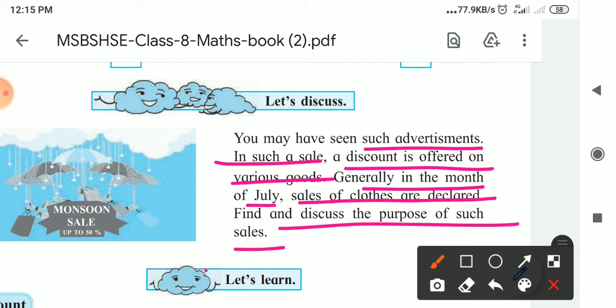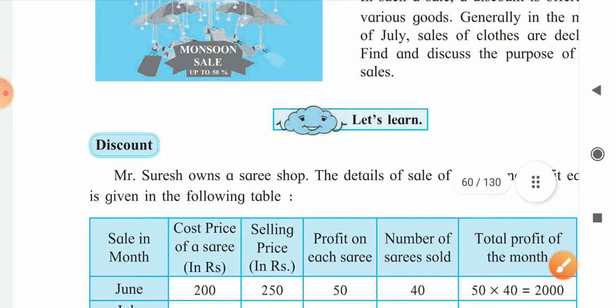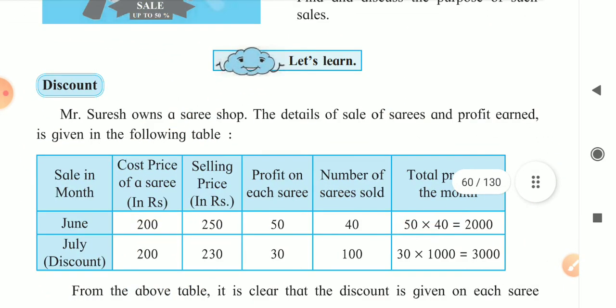What is the purpose of this sale? In July–August, Ganapati festival comes; then Navaratri, Rakshabandhan, Dashera, Diwali — so many festivals come one by one. For buying new things to sell during these festivals, the shopkeeper declares a sale on old things. This is called a monsoon sale.